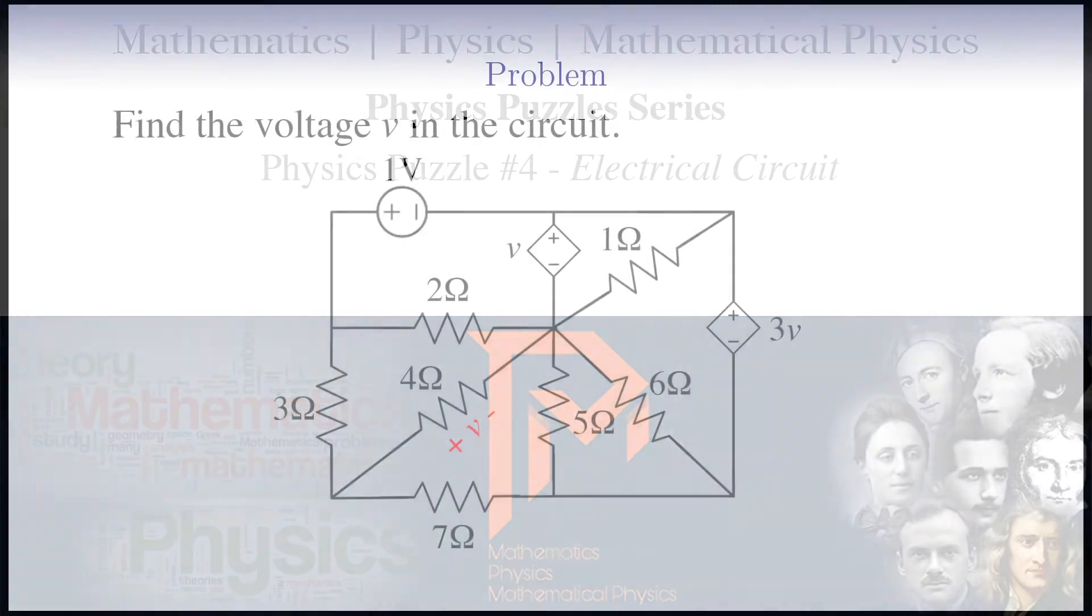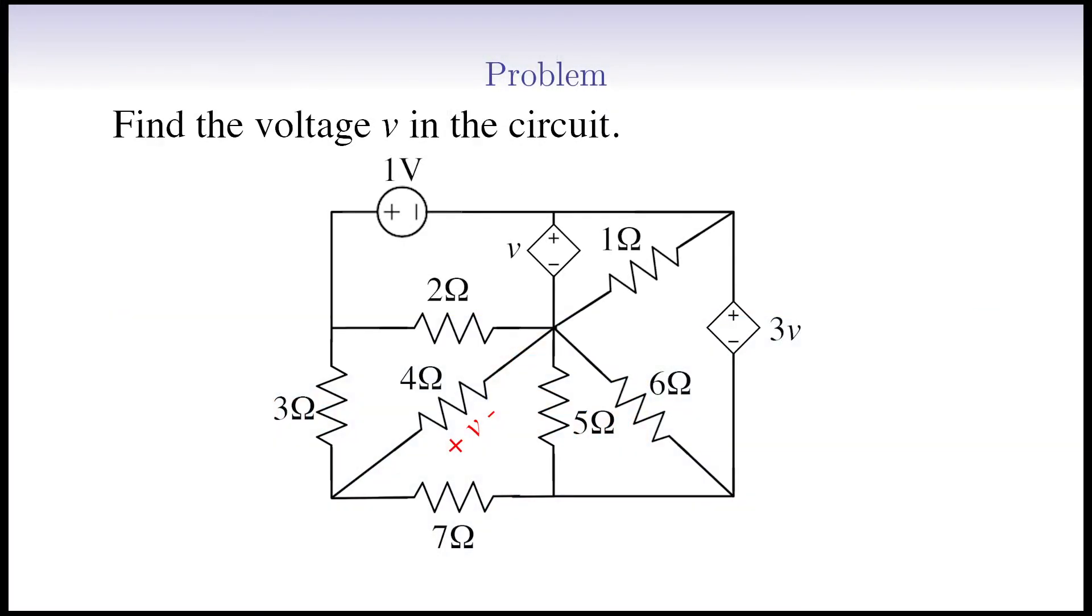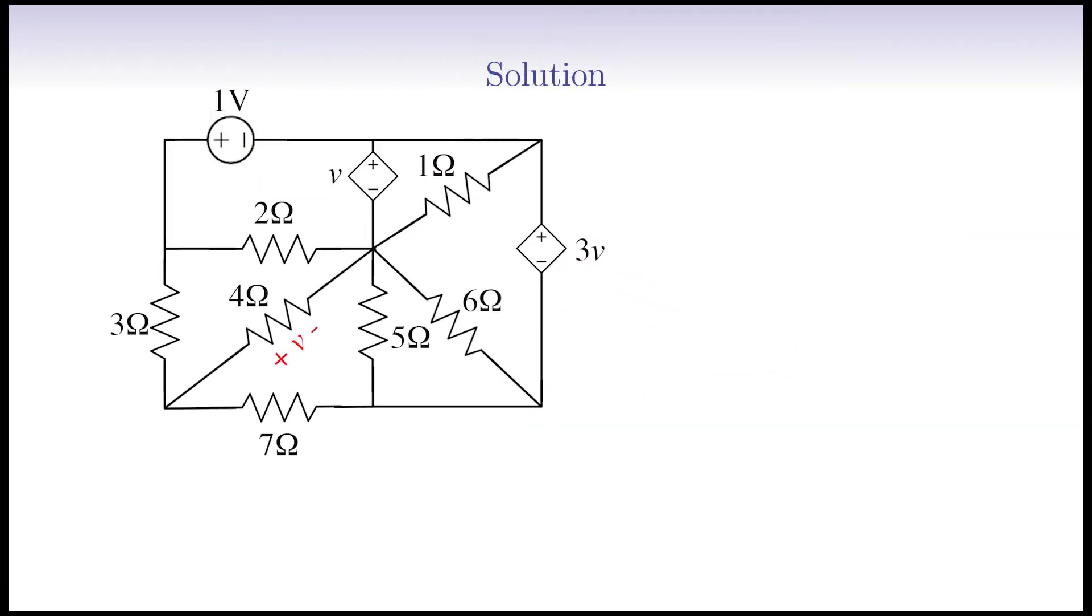Let's see what today's problem is about. This problem is very similar to Physics Olympiad problems, or maybe a little harder. In this problem, we're asked to find the voltage of the 4 ohm resistor, shown by the red color V, in the given circuit. As you can see, we notice two dependent voltage sources and one independent voltage source. The rest are the resistors, so we're dealing with a resistive circuit.